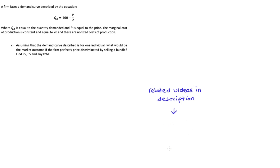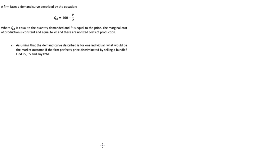In this question, we're told that a firm faces a demand curve described by the equation QD = 100 minus P over 2, where QD is the quantity demanded and P is the price. The marginal cost of production is constant and equal to 20, and there are no fixed costs of production.